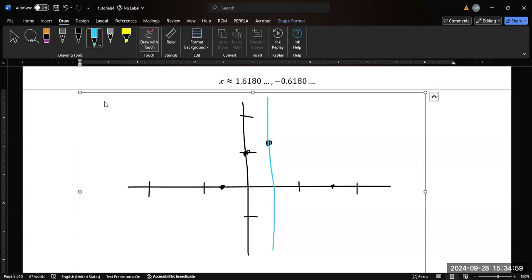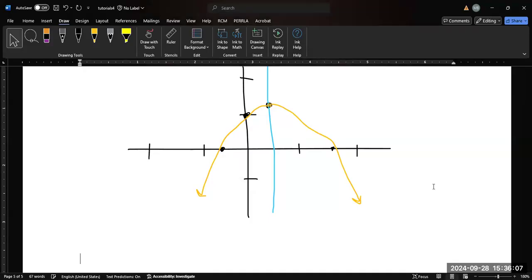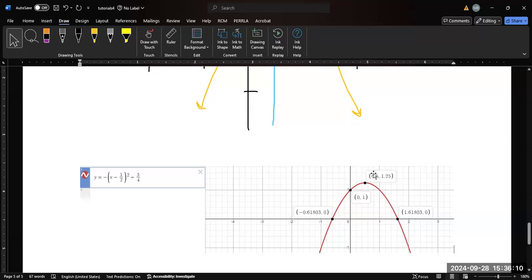My handwriting with technology is less good than it is on paper. Let's double check with Desmos and see if our graph looks correct. And when we go back to Desmos, we get the following graph. So this is consistent with what we plotted, our y-intercept is (0,1), our vertex at 0.5 and 1.25, and our two x-intercepts at phi and 1 over phi, it turns out. All right.